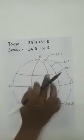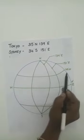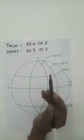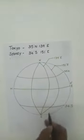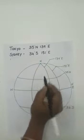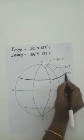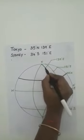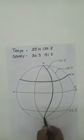First we will mark Tokyo. Here latitude 35 degrees north is located, and longitude is 139 degrees east. So 35 degrees north and 139 degrees east.